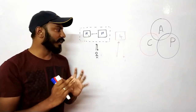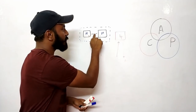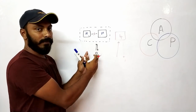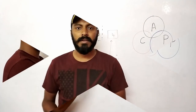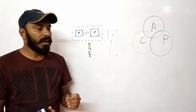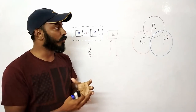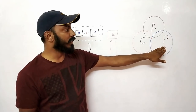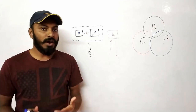Partition tolerance means that even if the connection between two machines in your cluster is broken, your system should still be up and running — you can still read and write the data in those nodes. In reality, you can't have all three CAP properties. You can have either consistency and availability (CA), consistency and partition tolerance (CP), or availability and partition tolerance (AP).